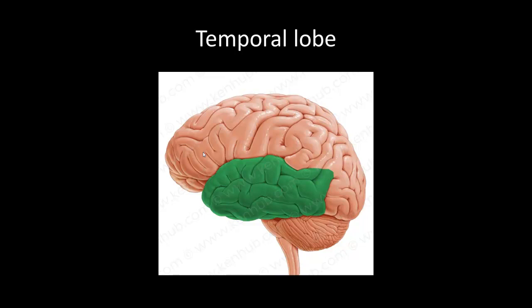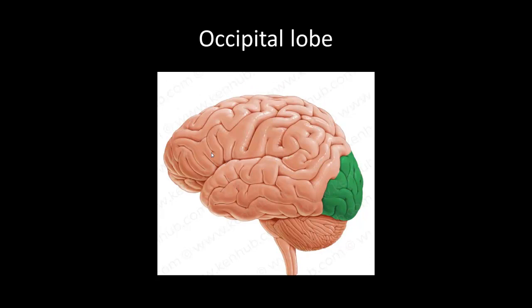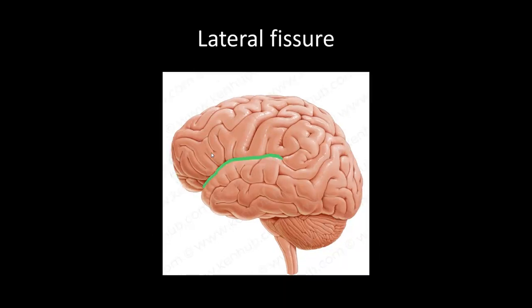The temporal lobe is located in the middle cranial fossa. That is followed by the occipital lobe, which has a primary and secondary visual cortex and is located in the posterior cranial fossa. Next we have the lateral fissure, highlighted in green, which separates our frontal and parietal lobe from our temporal lobe.